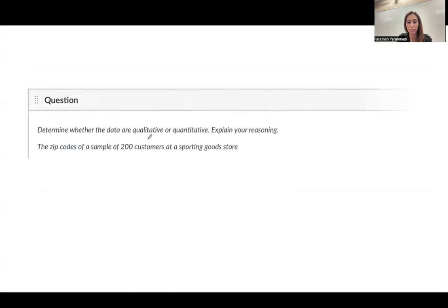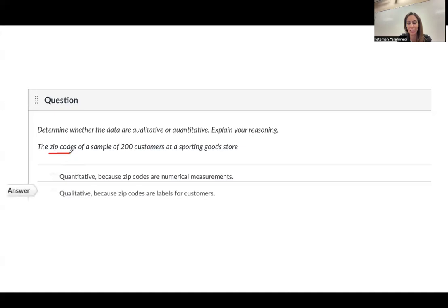Determine if you have a qualitative data. Qualitative data, like categorical data, like hair color, blood type, and so on. And quantitative data are the data that when you do algebra on them, the algebra makes sense. If you find the average of grades, that makes sense. But if you find the average of social security numbers, it doesn't make sense. Here, you have zip codes. The zip codes of a sample of 200 customers at a sporting goods store. Since you have zip codes, if you do algebra on zip codes, if you find the average of zip codes, that average doesn't mean anything. So, it means that you have a qualitative or categorical data here.